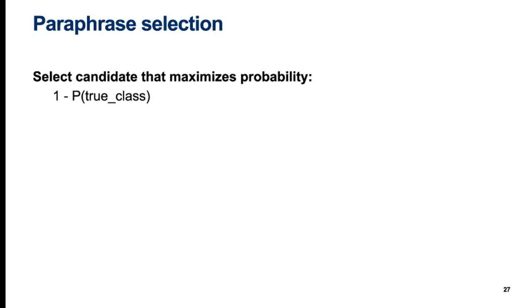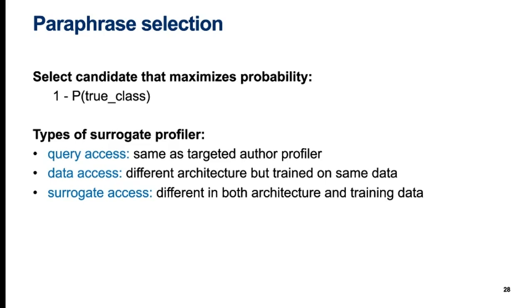In paraphrase selection, we choose the candidate that minimizes the likelihood of the surrogate profiler classifying it as the actual class. We experimented on three different types of surrogate profiler. With query access, the surrogate profiler was the same as the targeted author profiler itself. With data access, the surrogate profiler had a different architecture but the same training data as the targeted author profiler. With surrogate access, the surrogate profiler differed from the targeted author profiler in both architecture and training data.